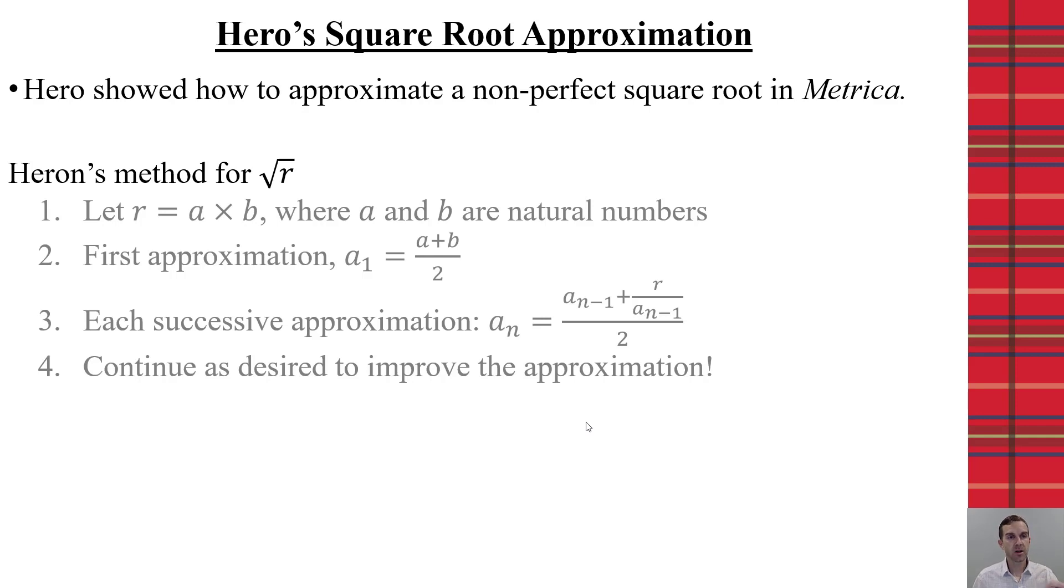But then, where Hiro made his big jump was the idea that for every iteration thereafter, if I take my previous value, add that to the original number I'm looking at divided by that value, over 2, that will get me closer and closer to my square root approximation. And you can do this over and over and over again.